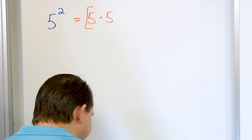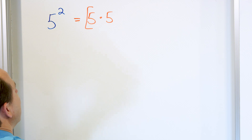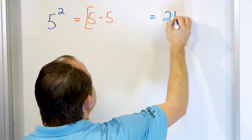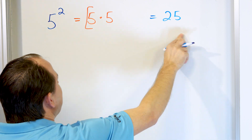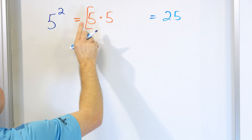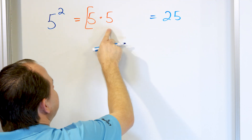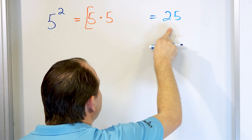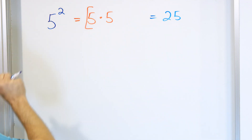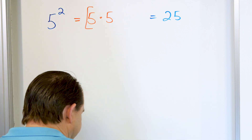You already know that five times five is 25. So these three things look different but they all mean the same thing. Five to the power of two means five times five — there are two of them because the power is two — and five times five equals 25. So 25 is also equal to five to the power of two. These are all three different ways of writing the same thing.